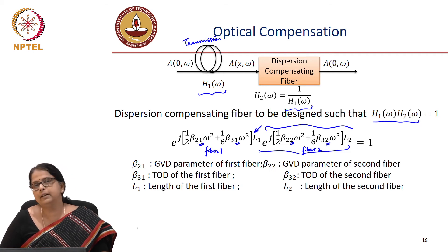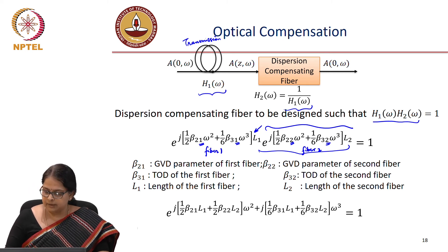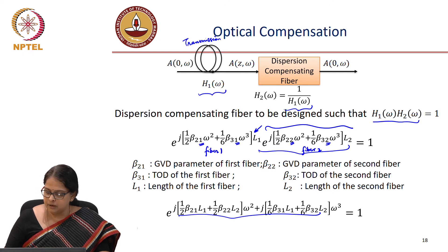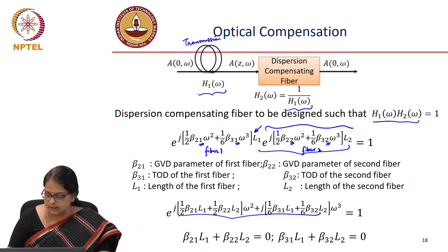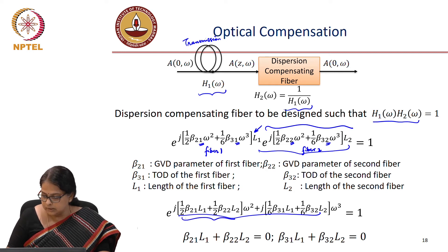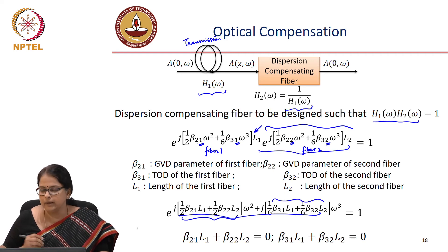L1 is the length of the first fiber and L2 is the length of the second fiber. Adding the two transfer functions together and pulling out the terms common to omega squared and omega cubed, for the product H1 times H2 to equal 1, the coefficient beta 2 1 times L1 plus beta 2 2 times L2 must equal 0, and the coefficient of omega cubed — beta 3 1 times L1 plus beta 3 2 times L2 — must also equal 0.